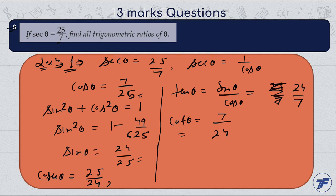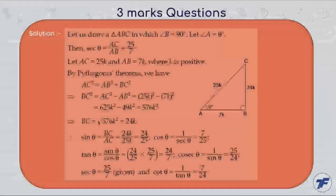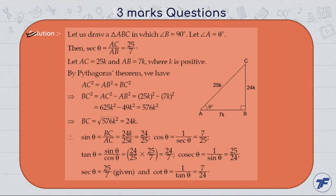This is the first method. Since this question is worth 3 marks, we will follow the second method. This is the standard rule. Let us draw a right-angled triangle ABC, right angle at B, and angle A we choose as θ.